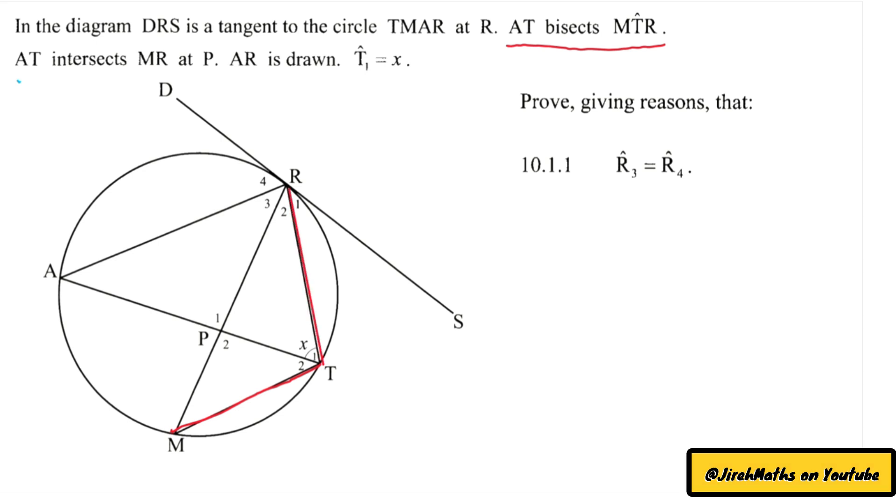to draw a line to R. Therefore, the angle MTR is that angle there. Now they tell us that AT bisects. Bisect means to cut in half, so AT cuts this angle in half. So if we have to draw